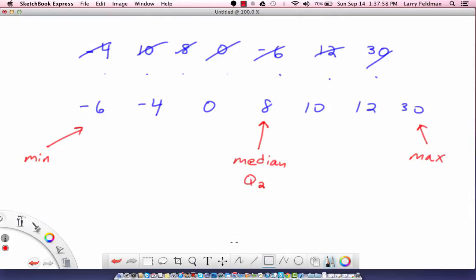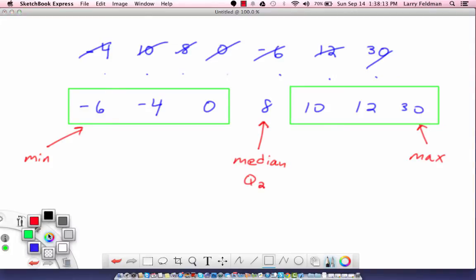Now once you have the median, we can look at the data to the left and to the right. I'm going to box that. Think about this green rectangle as a new data set. To find q1, which is the first quartile, we have to find the median of the data in this green rectangle. The median of this data is negative 4, and this is called q1. Similarly, we need to find the median of this green rectangle on the right, and the median is 12. That's q3.